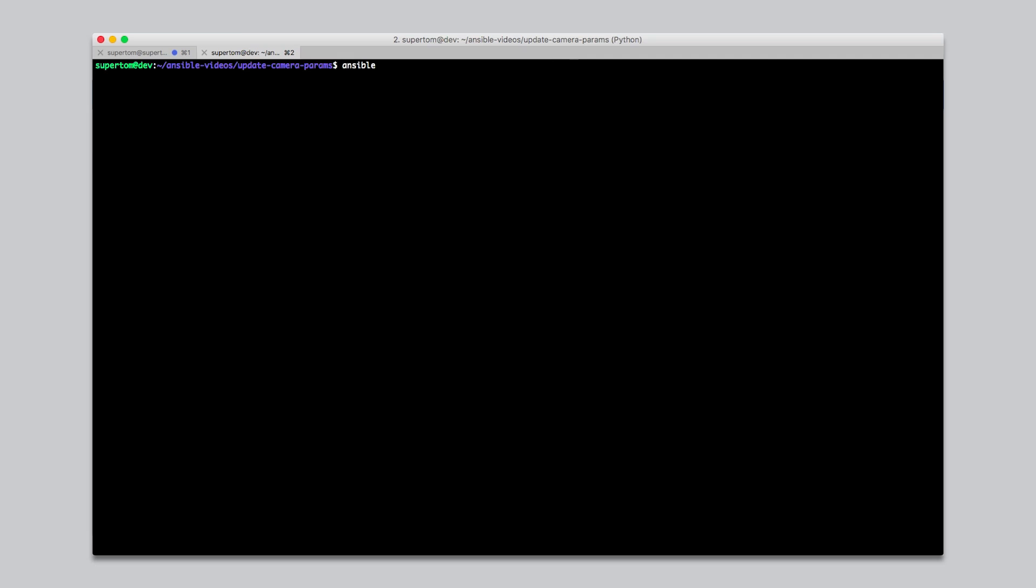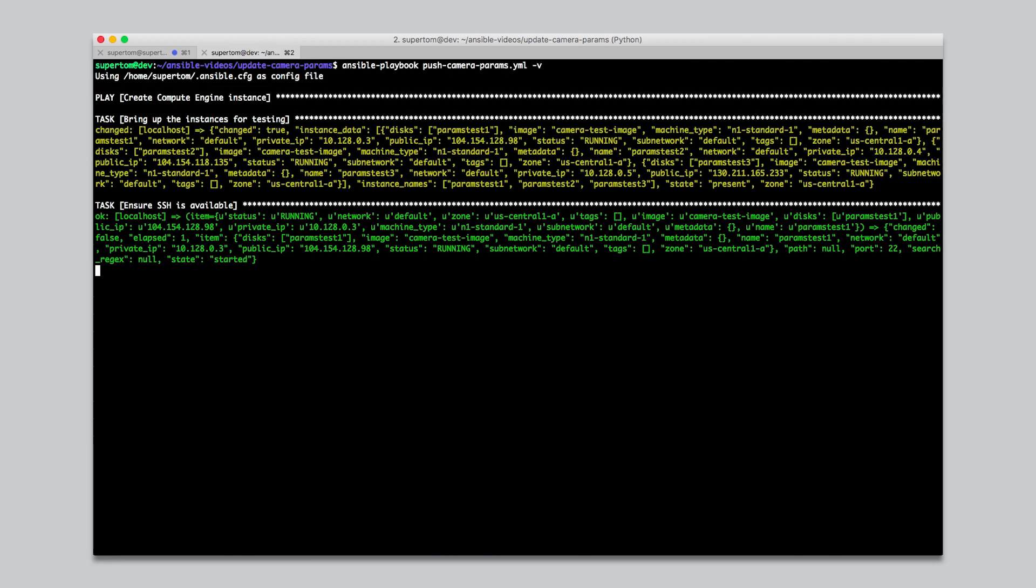Since I was paged, I'm going to get the provisioning, test, and push process started, and then we'll take a look at the configuration. I have an Ansible playbook I can use for this. And all I need to do on my laptop is type ansible-playbook push camera params. And while that's working, Dylan, do you want to walk us through the playbooks a bit?